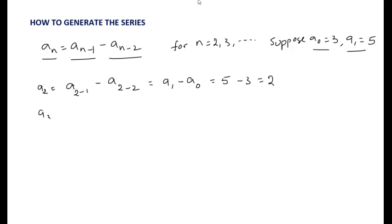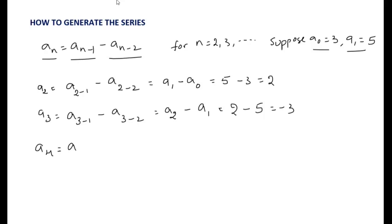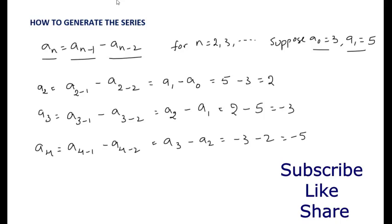Similarly, to calculate a₃, substitute n = 3: a₃ = a₂ − a₁ = 2 − 5 = −3. For a₄: a₄ = a₃ − a₂ = −3 − 2 = −5. We can calculate a₅, a₆, and so on in the same way. The resulting series is: a₀ = 3, a₁ = 5, a₂ = 2, a₃ = −3, a₄ = −5. That is how we generate the series using the given recurrence relation.